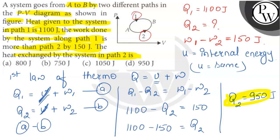The value is 950 joules. Now let's check the options. If we check the options, option D is the correct match. So this is the final answer and I hope you understood it well. All the best.